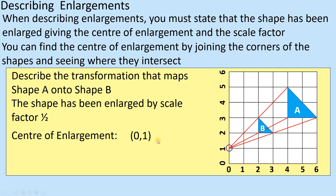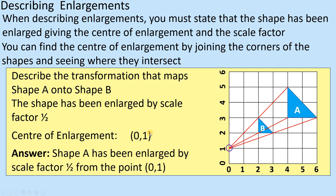So if you're describing this transformation, you would say: it's an enlargement with a scale factor of one half, from centre of enlargement (0, 1). You need to clearly state those points for the examiner — three marks: state it's an enlargement, give the scale factor, and give the centre point (0, 1).